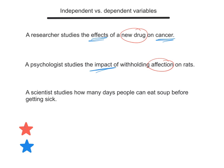A scientist studies how many days people can eat soup before getting sick. The independent variable is the number of days that people eat soup — a week, two weeks, two months. The dependent variable is whether they get sick or not.